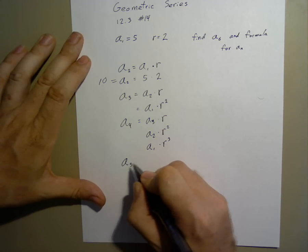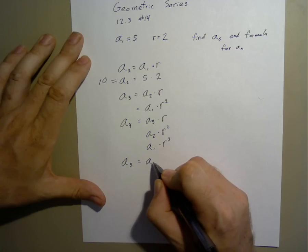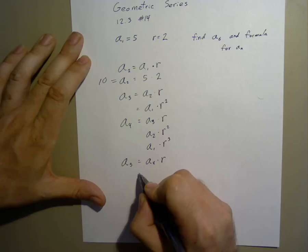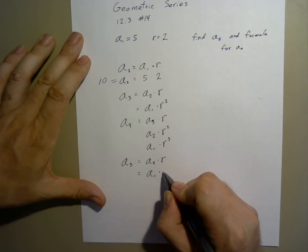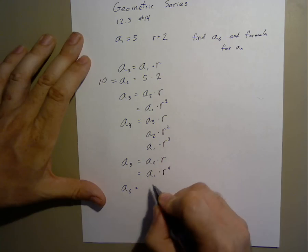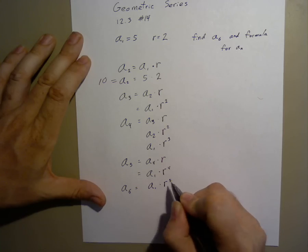Continuing with this, a5 would have been a4 times r, or simply a1 times r to the 4th. A6 is a1 times r to the 5th.